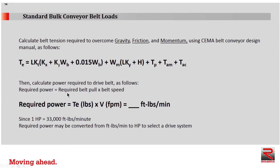Once we know the effective belt tension in pounds, we can calculate the power required to drive the belt. Required power equals the required belt pull times the belt speed: TE times V, where TE is in pounds and V is in feet per minute, giving an answer in foot-pounds per minute. Since one horsepower equals 33,000 foot-pounds per minute, the required power can be converted to horsepower and a drive system can be selected.